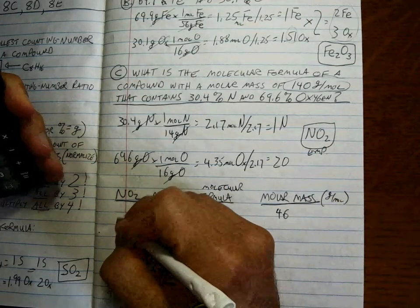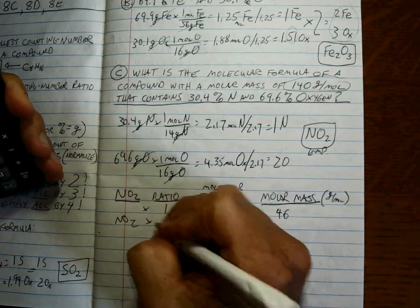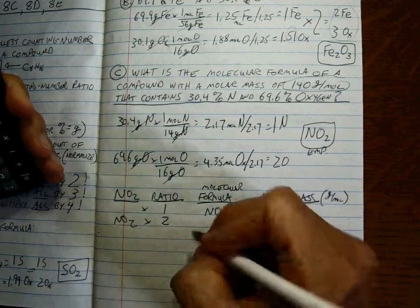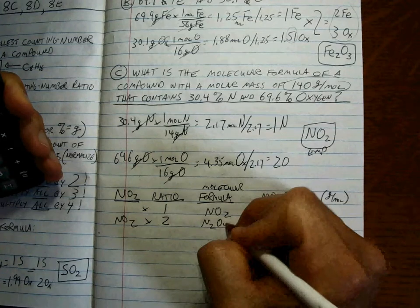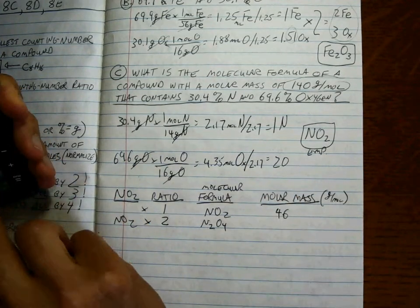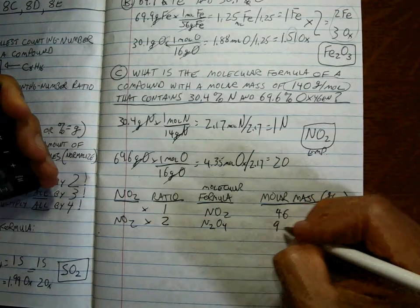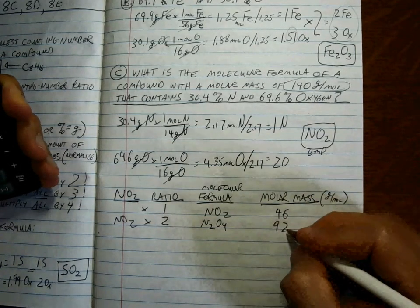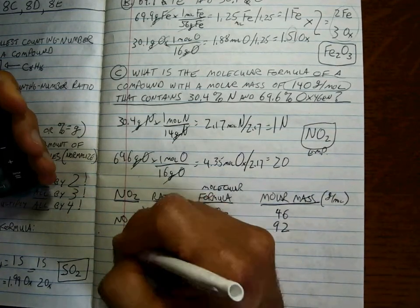Okay. Well, what if we took NO2 and the ratio was two of them. That would be N2O4, wouldn't it? And N2O4 has a molar mass of 92. And we can keep going here. N3O6. And that molar mass is 138.